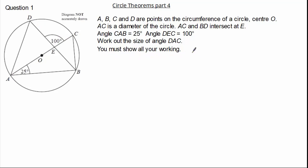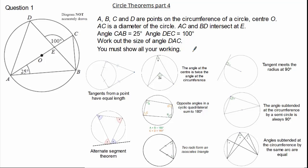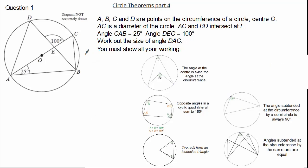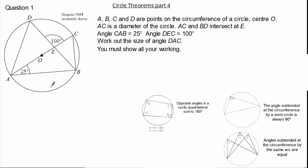See if you can give it a go and press pause if you need. It's important to extract as much information as possible to determine which circle theorems we can use. Here you can read and see we do not have any tangents, no angles at the centre, no isosceles triangles from radii, and no cyclic quadrilateral.